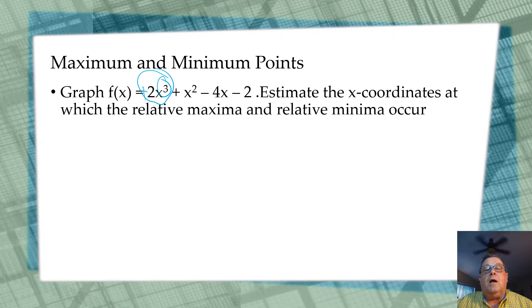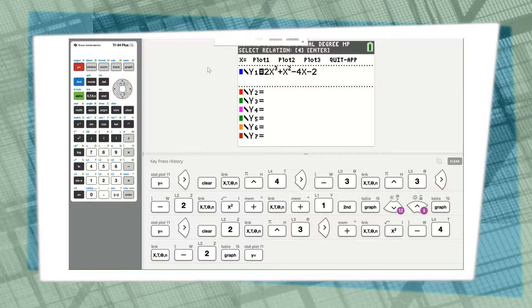Let's go to the calculator. We're going to eyeball the graph, and then we're going to use a feature on our calculator that will help us get a very close estimate of what these maxima and minima are. Here we are on the calculator, and as you can see in the y equals, I've already entered the function 2x³ + x² - 4x - 2. So let's go take a look at the graph.